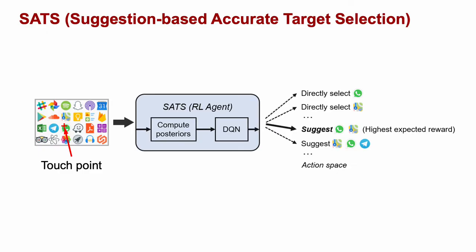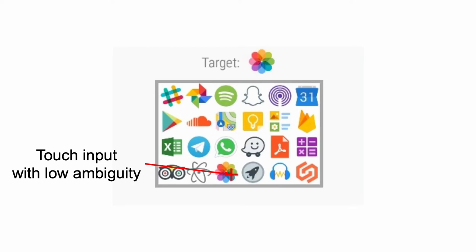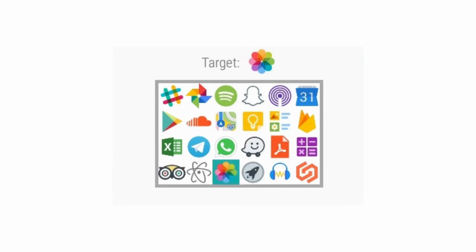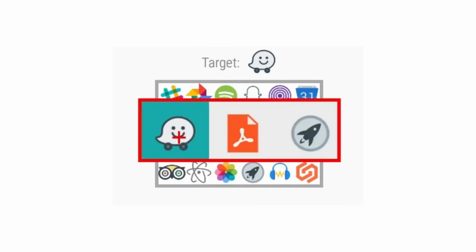In this paper, we propose SETS, a suggestion-based accurate target selection method for small touch screens using reinforcement learning. If the touch input is certain, SETS directly selects the target candidate. And if the touch input is ambiguous, SETS shows suggestions for the user to select from.